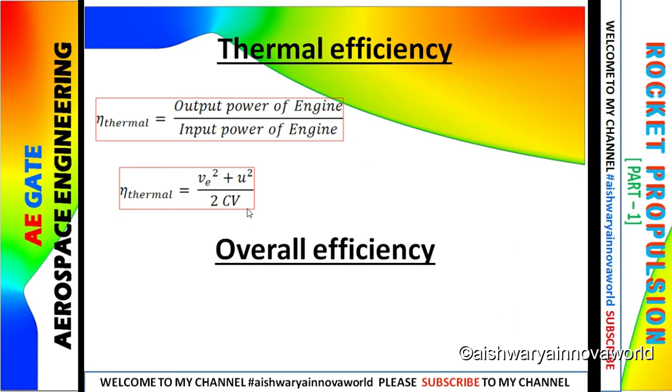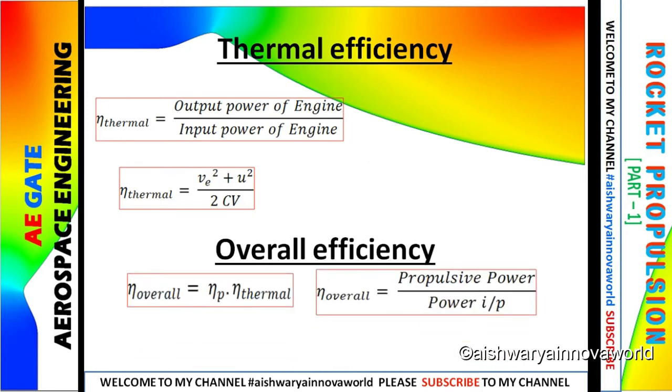Now comes overall efficiency. Overall efficiency is the product of propulsive efficiency and thermal efficiency. When you combine both formulas we get propulsive power by power input of engine. When you substitute the values we get that it is the product of forward and effective jet velocity by calorific value.